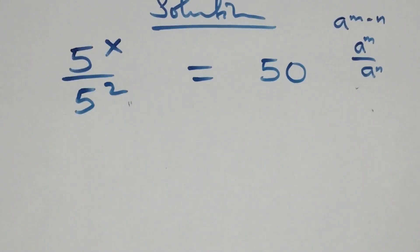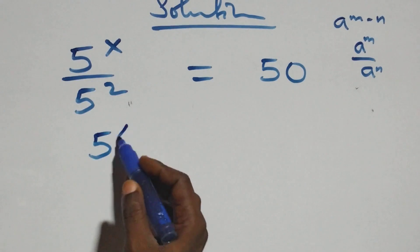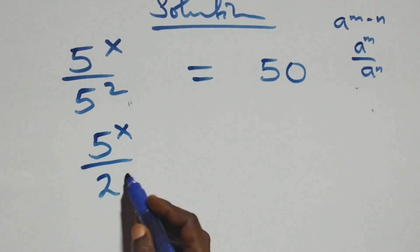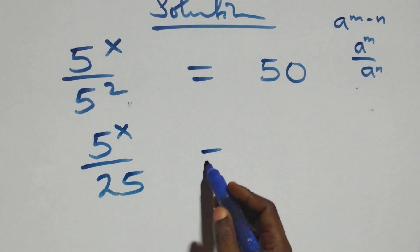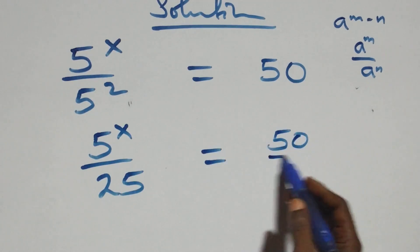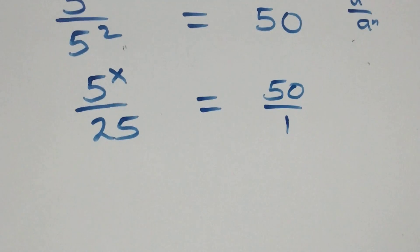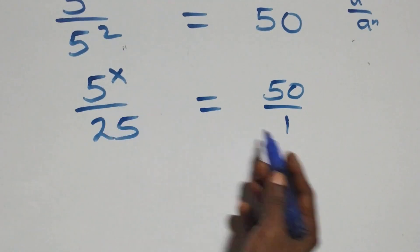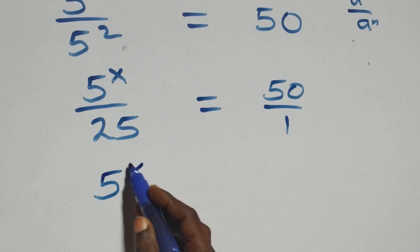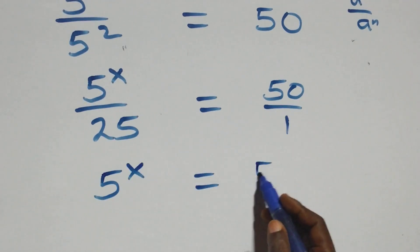We can write this as 5 raised to power x over 5 squared, where 5 times 5 is 25. This equals 50 over 1. The next step is to cross multiply: 5 raised to power x times 1, which is the same as 5 raised to power x, equals 50 times 25.